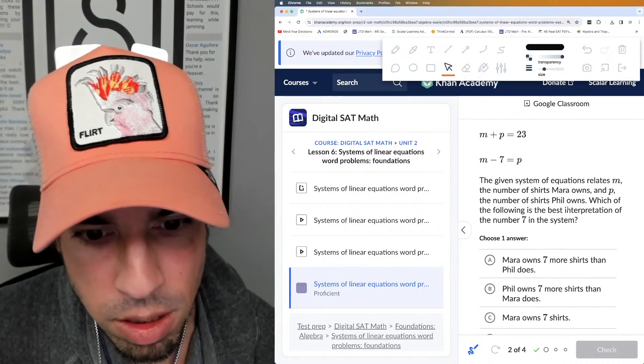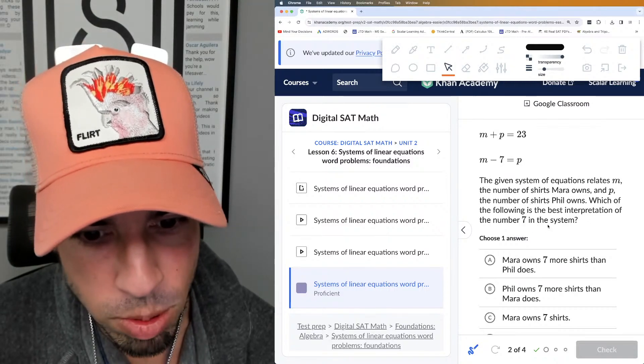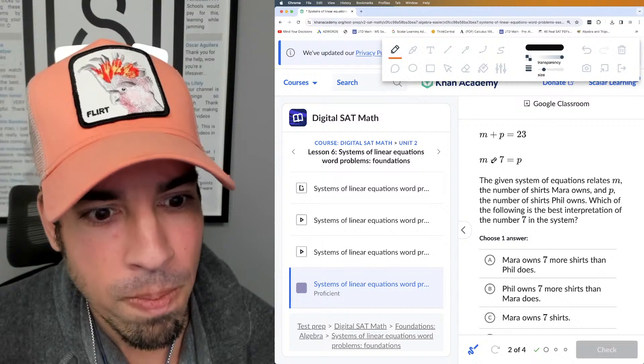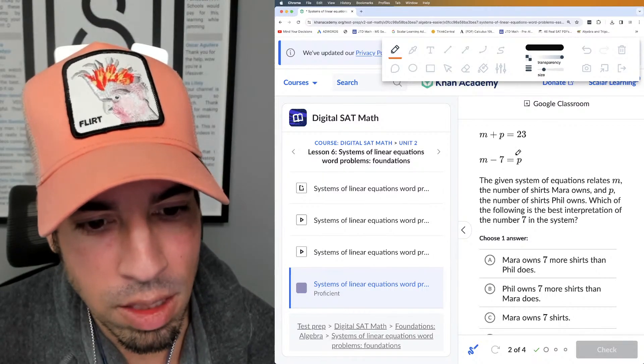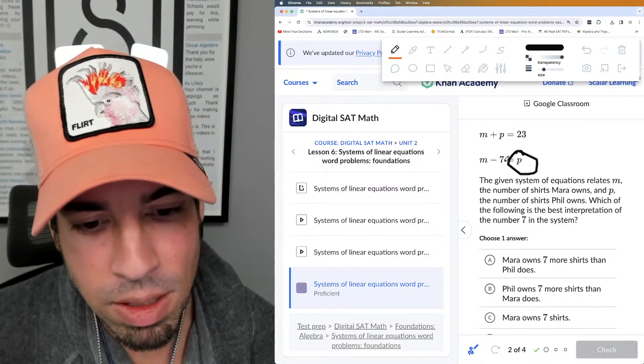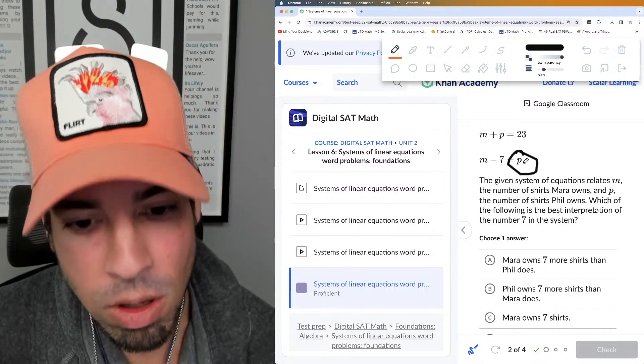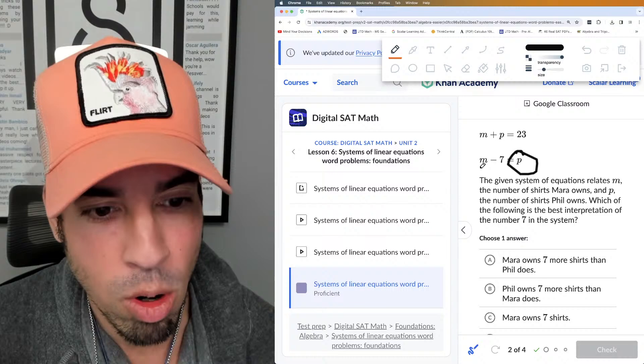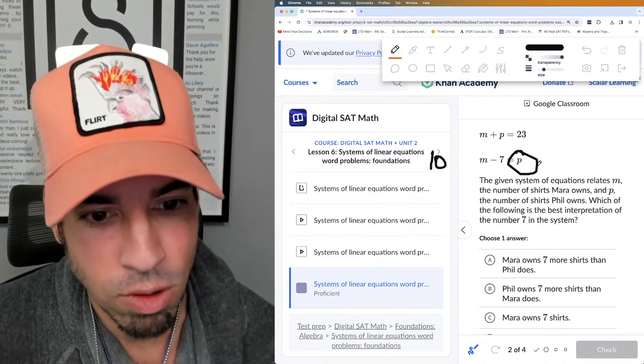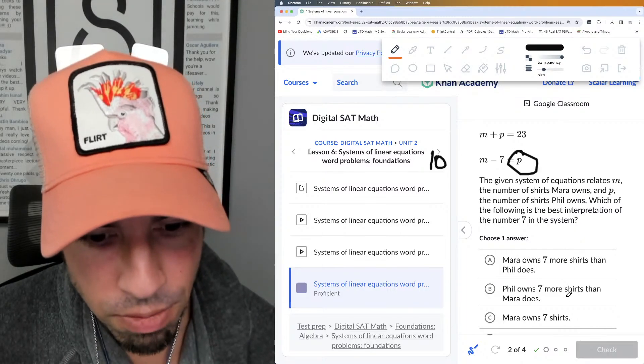All right, number two. The given system of equations relates m, the number of shirts Mara owns, and p, the number of shirts Phil owns. Which of the following is the best interpretation of the number seven in the system? Well, m minus seven—what we can say is that Paul—sorry, Phil—would then therefore own seven fewer shirts than Mara, right? Because imagine if Mara owns 10 shirts, Phil would own 10 minus 7, which is 3.